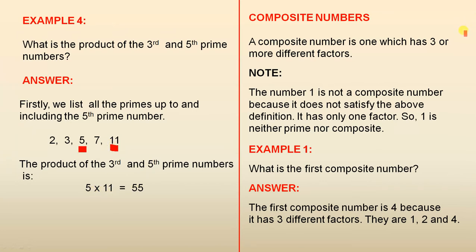Composite numbers: a composite number is one which has three or more different factors. Note: the number one is not a composite number because it does not satisfy the above definition — it has only one factor. So one is neither prime nor composite.